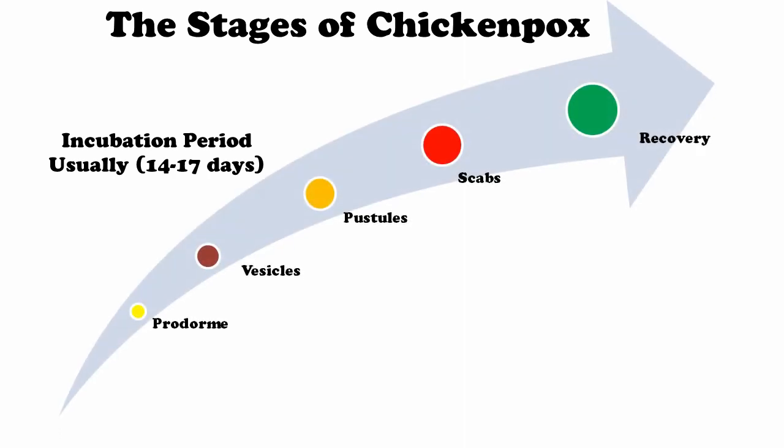The stages of this infection on recovery are: prodrome, vesicles, pustules, scabs and recovery. The prodrome stage involves fever and malaise, then vesicle formation, then pustules and scabs — which are the dried form — and then the recovery process starts. So these are the stages of chickenpox that will be encountered in diseased individuals.